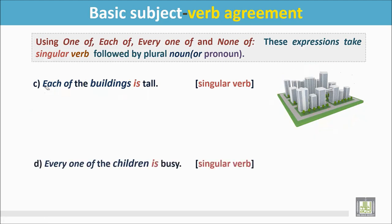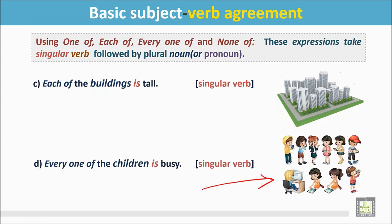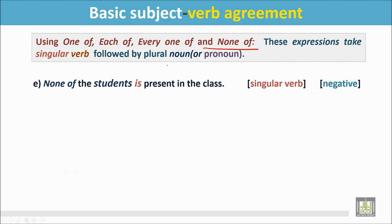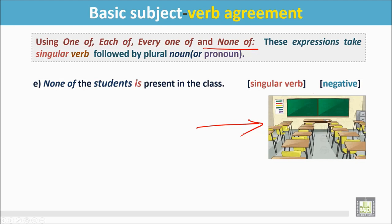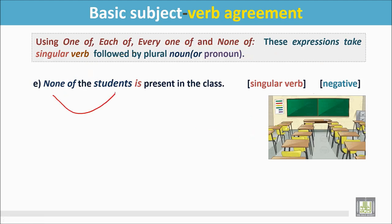Every one of the children is busy. In this picture there are many children. Each of the children is doing different activities. The sentence begins with 'every one' and is followed by a plural noun. None of the students is present in the class — this class has no students. The sentence begins with 'none,' which gives a negative meaning. 'None' is followed by a plural noun, 'students,' but this plural noun is followed by a singular verb: 'is.'